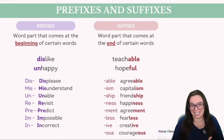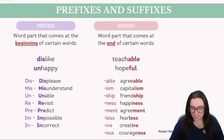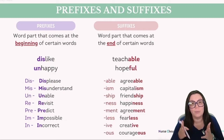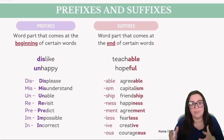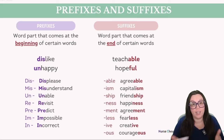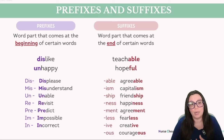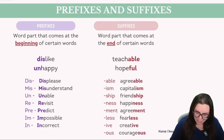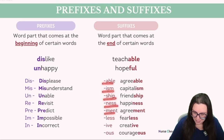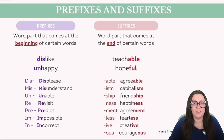Now let's talk about suffixes. Consider the word teach, which denotes the action of instructing. By adding the suffix -able (A-B-L-E), it transforms the word into teachable, changing its nature from an action to a characteristic — describing someone or something that can be taught. Another example: adding the suffix -ful (F-U-L) to hope alters it into hopeful, an adjective describing the state of being filled with hope. Frequently encountered suffixes on the TEAS include: -able, -ism, -ship, -ness, -ment, -less, -ly, and -ous.